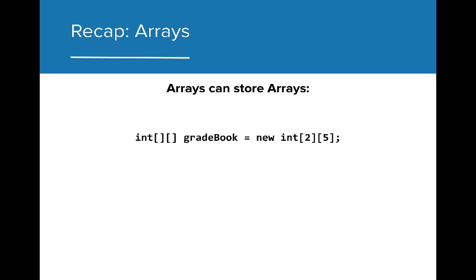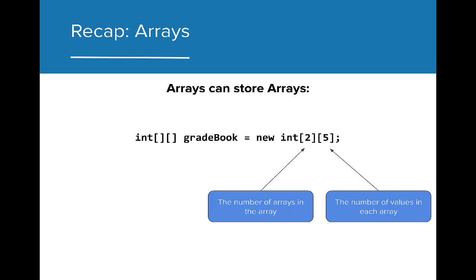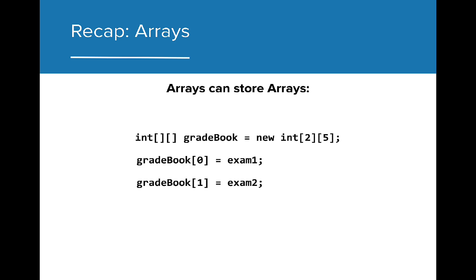Alternatively, we can create an array that stores arrays by creating an empty array. This code tells Java to create an array that can store two arrays, each with their own set of five indices. We can then add individual arrays to the array. In this case, we can only add up to two arrays, as the array only allows for two.